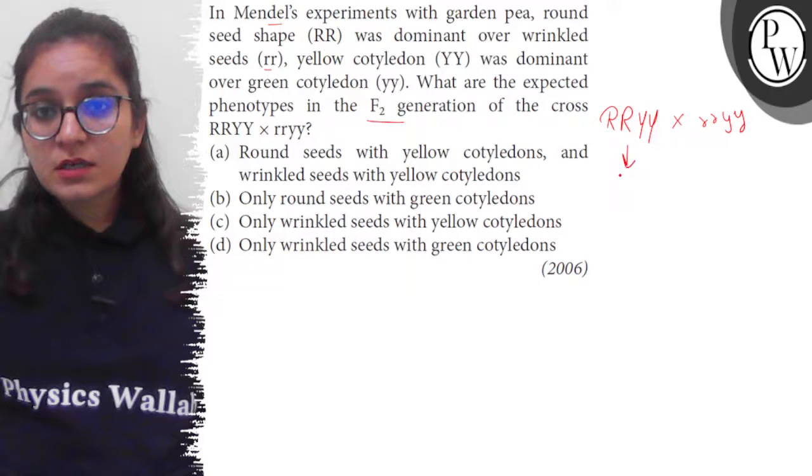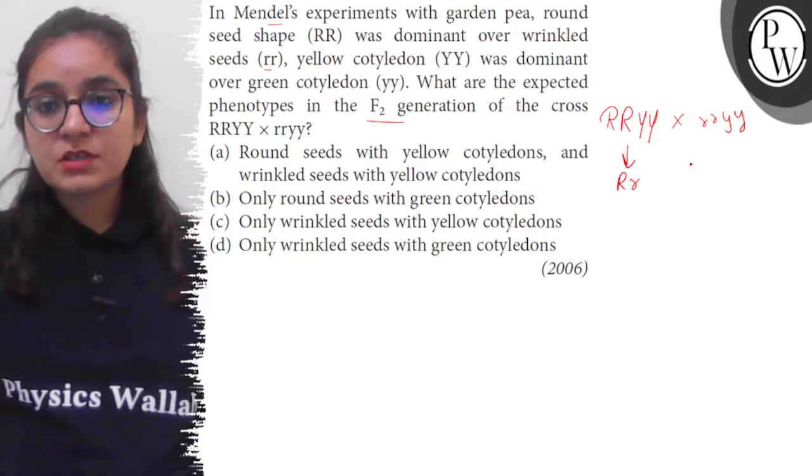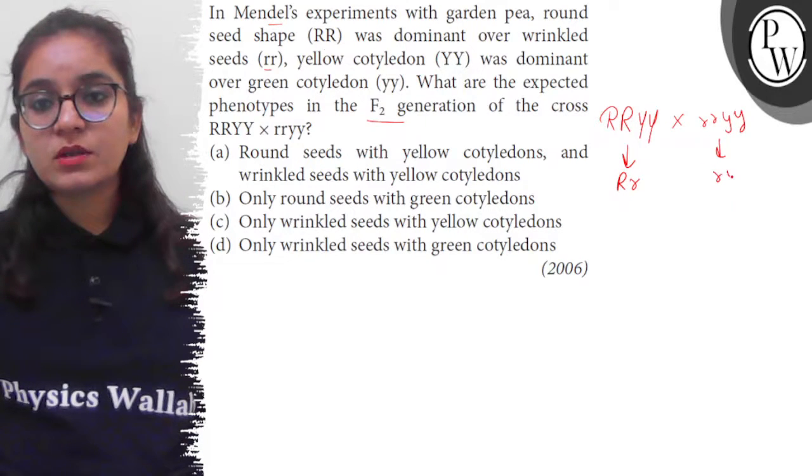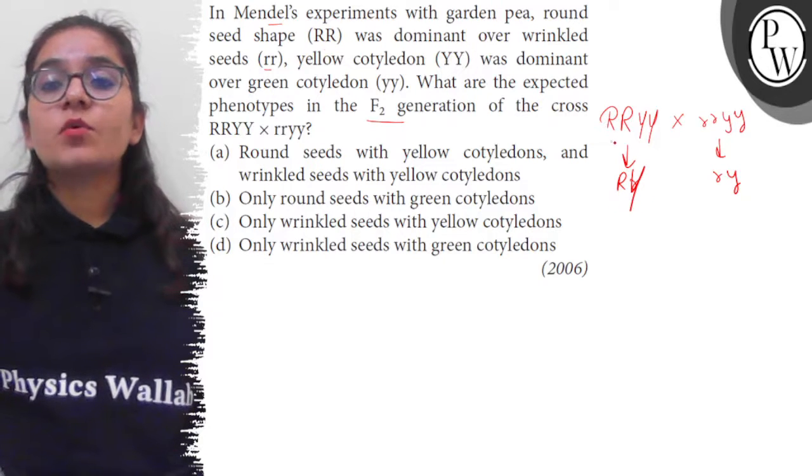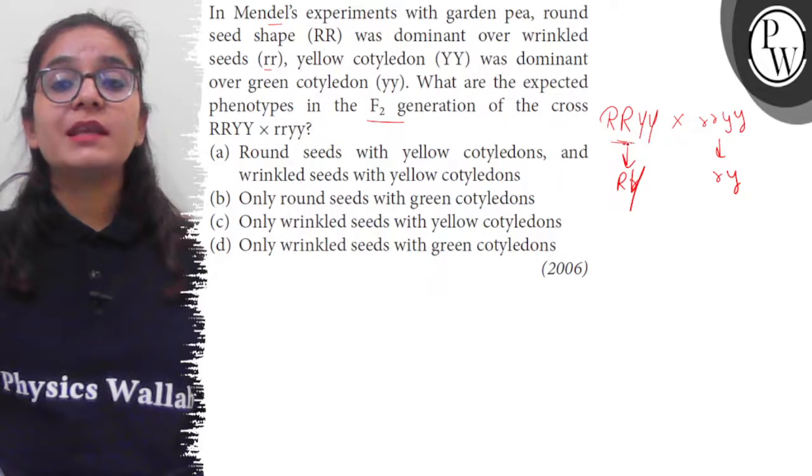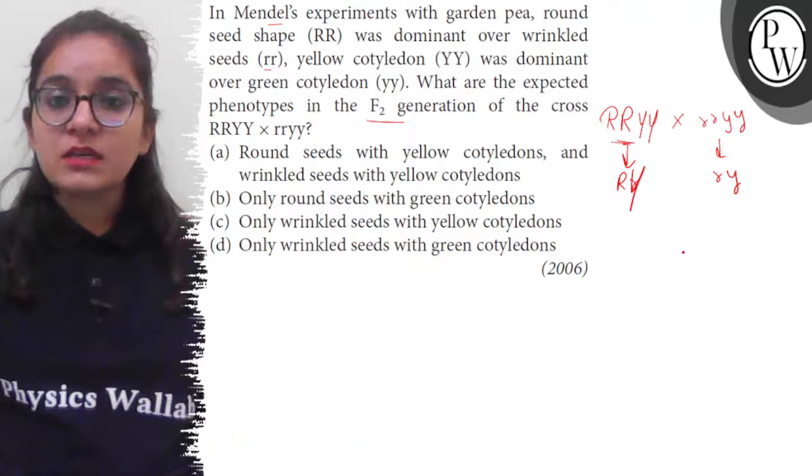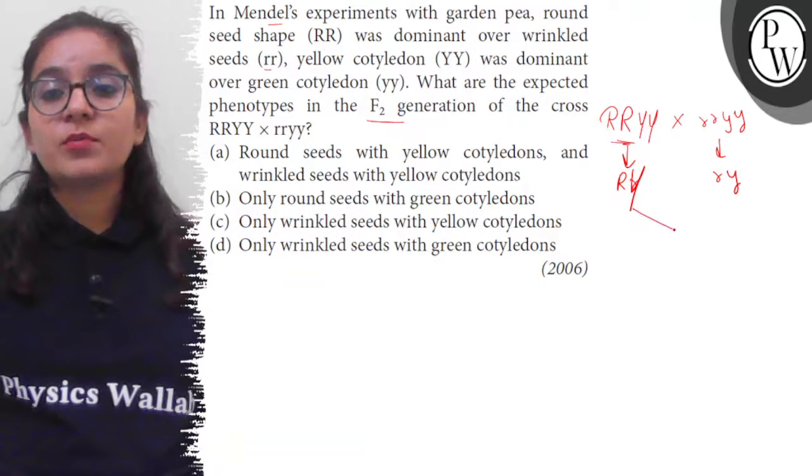So in first generation, there will be only one type of gametes. Why? Because both the alleles of the parent are homozygous. When homozygous, only one type of gamete is produced.